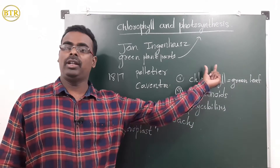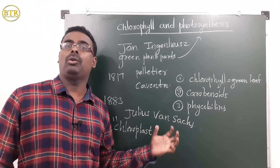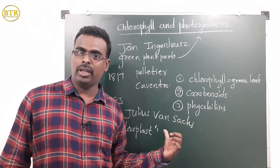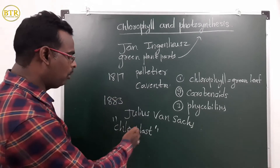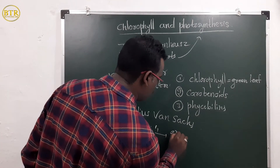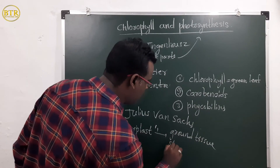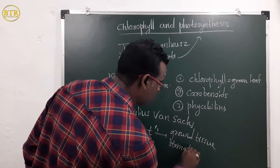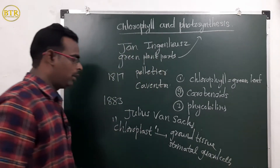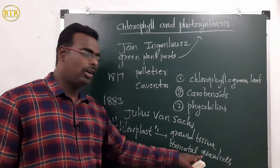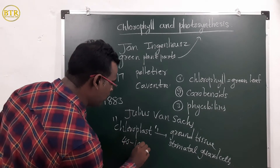Van Sachs proved that chlorophyll is present in the chloroplast only. Where do you find the chloroplast? Many chloroplasts can be found in the ground tissue of the leaf and in stomatal guard cells.